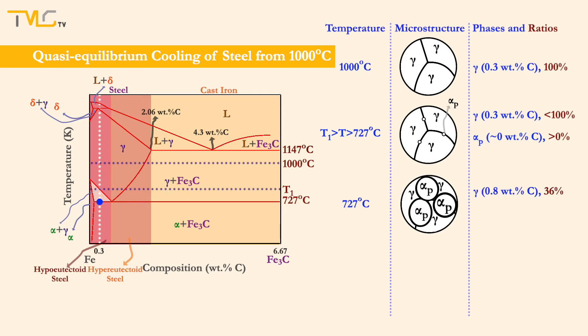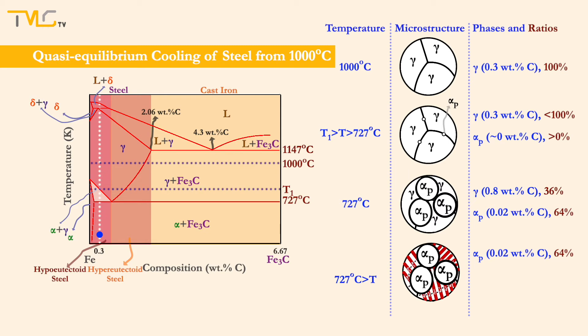Just above the eutectoid temperature, the ferrite phase stands for 64% and the austenite phase stands for 36% of the two-phase mixture. It should be highlighted that the ferrite phase has minimal carbon solubility — the carbon remaining in the structure is either dissolved in the austenite phase or in the cementite phase. Upon cooling and passing the eutectoid temperature, the reaction occurs. The previously formed ferrite phase stays as it is and is called primary eutectoid ferrite, while the austenite phase transforms into a two-phase lamellar structure called pearlite.